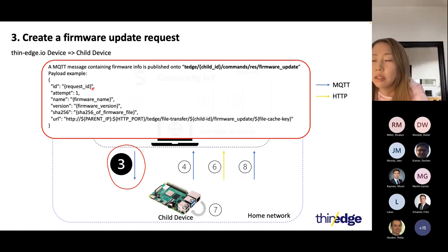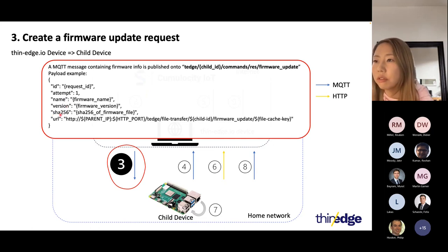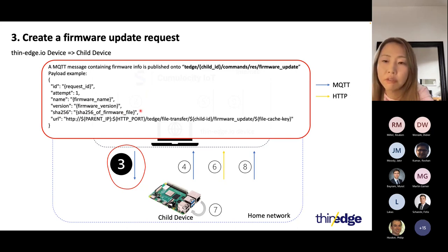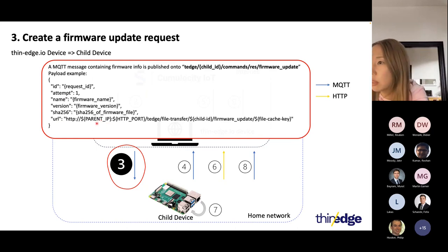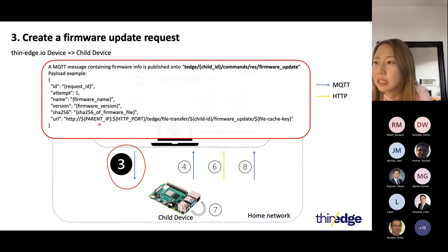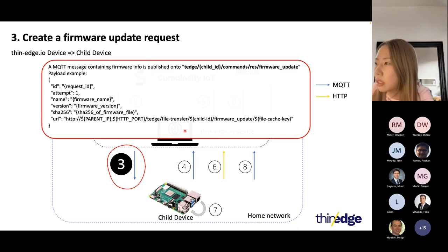The payload contains: an ID assigned internally; attempt, which is how many times the same request is sent; name; version; and SHA-256, which is a checksum of the file so you can verify it after downloading. The last important field is URL — this is the endpoint accessible in the local network. Most likely the parent IP part is something like 192.168.x.x — the point is it's not publicly available, just accessible on the local network.